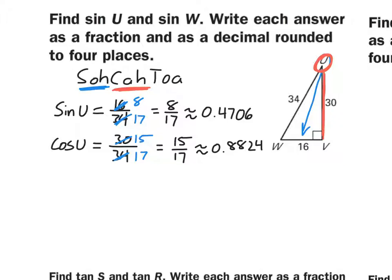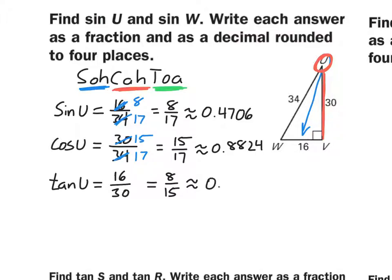The last one is the tangent of angle U. The tangent ratio is opposite over adjacent. We've already identified that the opposite side is 16 and the adjacent side is 30. So tangent of angle U equals 16 over 30, which reduces to 8 fifteenths, approximately 0.5333.